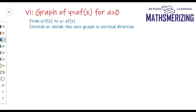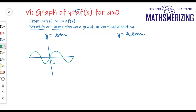The sixth transformation is: from the graph of y equals f(x), draw the graph of y equals a·f(x), where a is a positive number. Depending on the value of a, we either stretch or shrink the graph in the vertical direction. For 2·sin x, I stretch the graph along the y-axis. Previously its amplitude was between −1 and +1; now it will be between −2 and +2. The basic shape remains the same; only the amplitude changes.